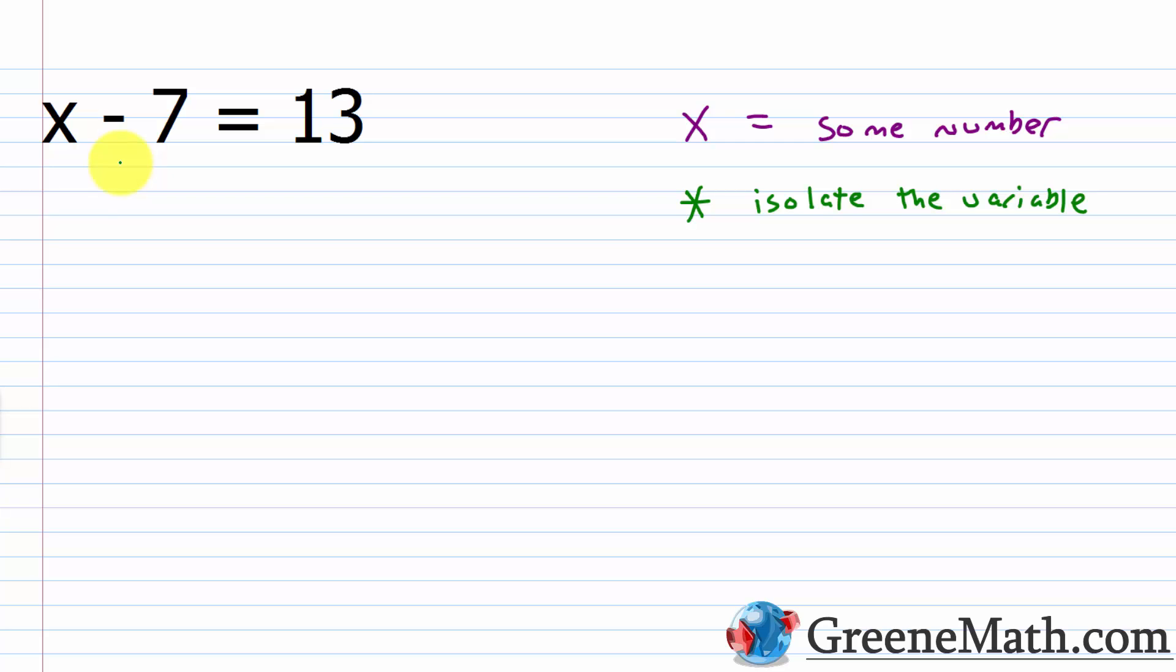So there's a few properties we can talk about real quick. The first thing is that adding a number and its opposite will always give you zero. The second thing is that adding zero to a number leaves it unchanged. And the third thing is that we can add or subtract the same value to or from both sides of an equation and not change the solution. That last property is known as the addition property of equality.